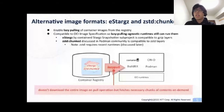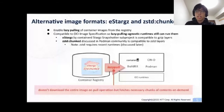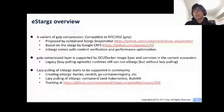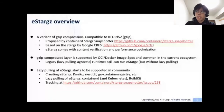eStargz and zstd-chunked. eStargz is by the ContainerD Stargz Snapshot sub-project. This is compatible to standard GZIP layers. And zstd-chunked is by the Podman community — this is compatible to zstd layers. eStargz is a variant of GZIP compression proposed by the ContainerD Stargz Snapshot sub-project. The structure is based on stargz by Google's CRFS project, but eStargz has additional features including performance optimization and content verification. GZIP-compressed layers are supported by OCI standards and are very common in the current ecosystem. Because of the compatibility to GZIP, eStargz images can run on eStargz-agnostic legacy runtimes.